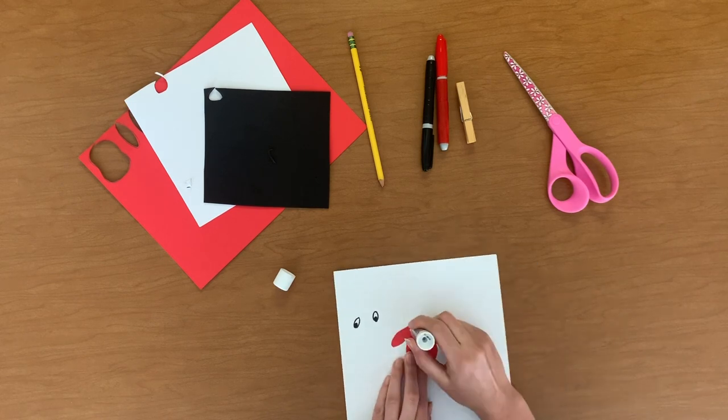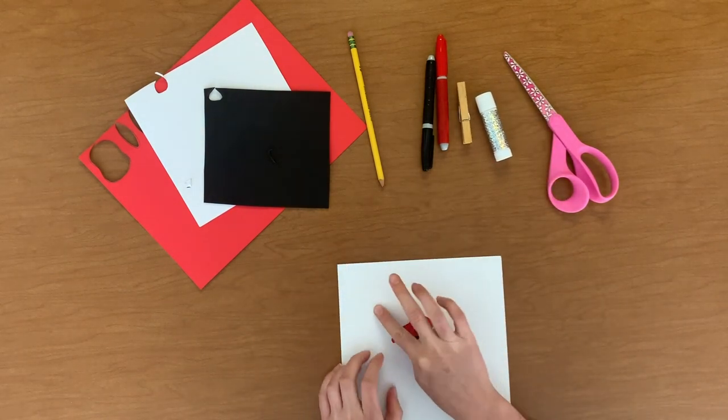Finally, glue both of Clifford's eyes above his nose, pressing all of your shapes down to make sure everything sticks.